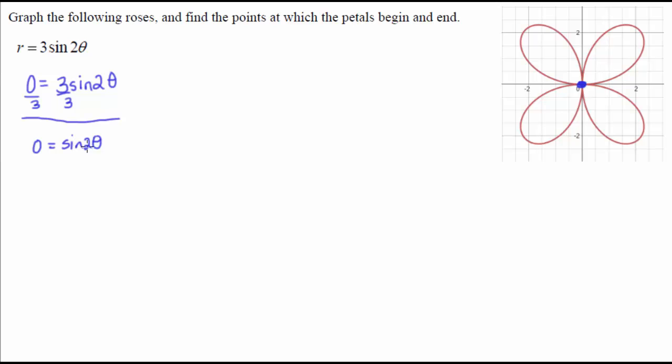So zero equals sine two theta. Now I don't mess with the two right now, I first have to get rid of sine. To get rid of sine, I say, when is sine equal to zero?